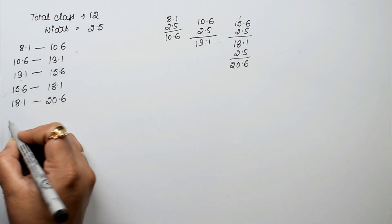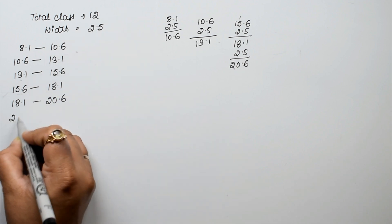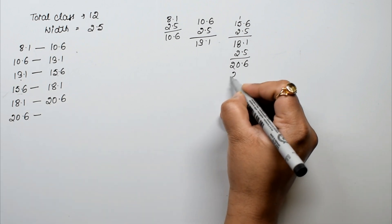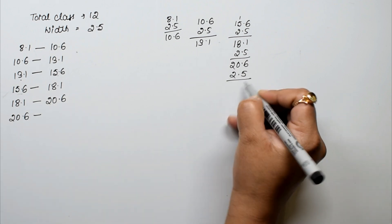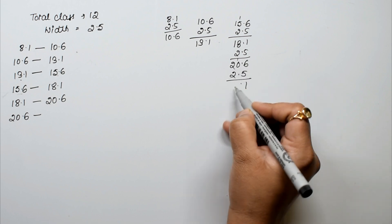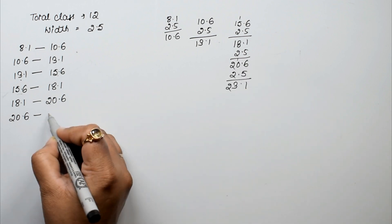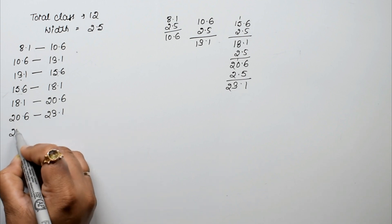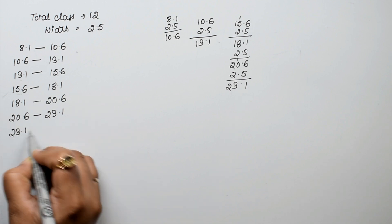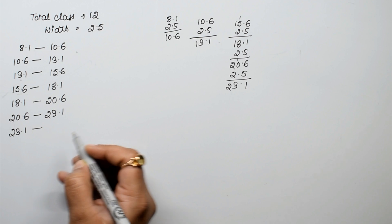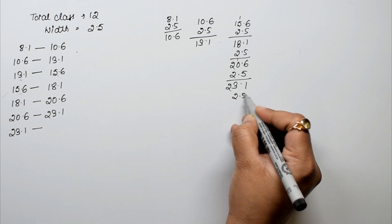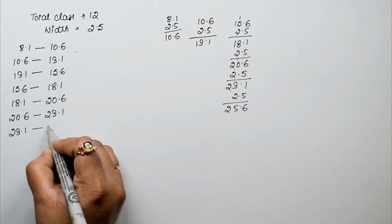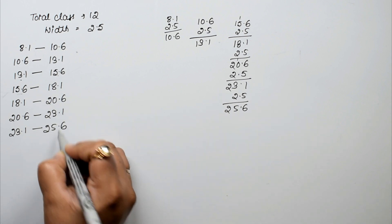We now have 5 classes done. From 20.6, add 2.5 again to get 23.1 — that is the 6th class. Then 23.1 + 2.5 = 25.6, which is the 7th class boundary.